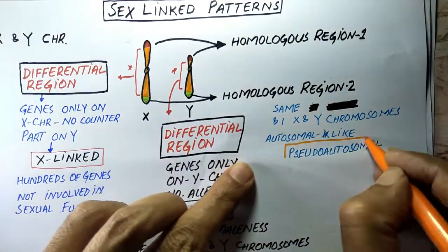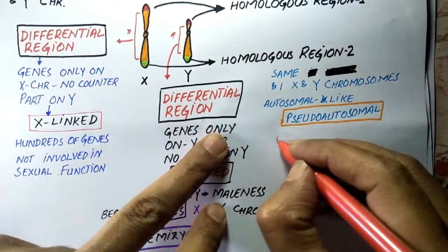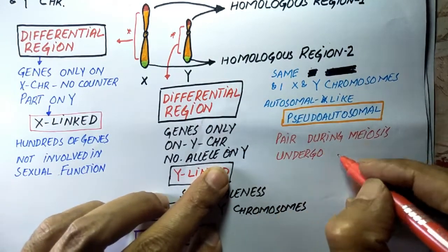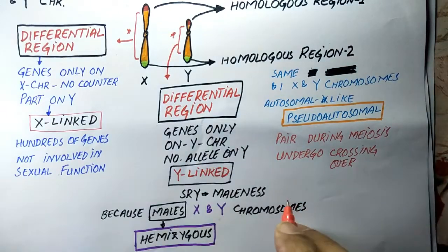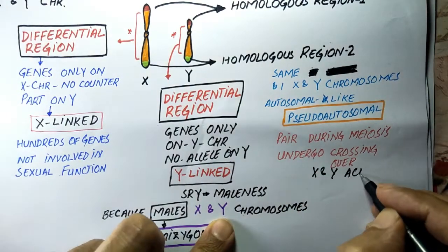Their pattern of inheritance is like that of autosomal genes. X and Y chromosomes pair up during meiosis due to the presence of these homologous regions. Crossing over also takes place in these homologous regions.